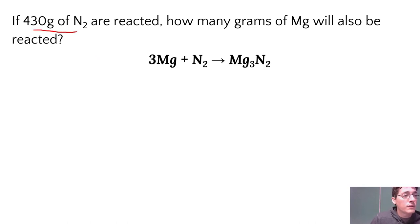If 430 grams of nitrogen are reacted, so we're here, how many grams of magnesium will also be reacted? So question mark grams over here.